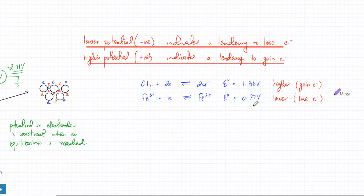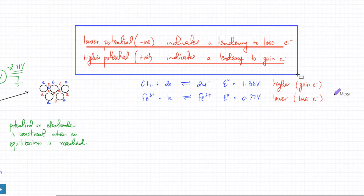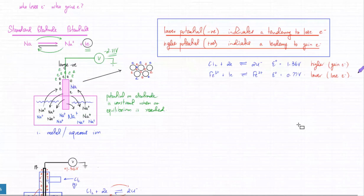Just remember — this sums up the entire electrochemistry. This is what we are looking for: who's going to gain electrons, who's going to lose electrons? The potential values tell us exactly that. The higher potential is the one that gains electrons, and the lower potential is the one that loses electrons.